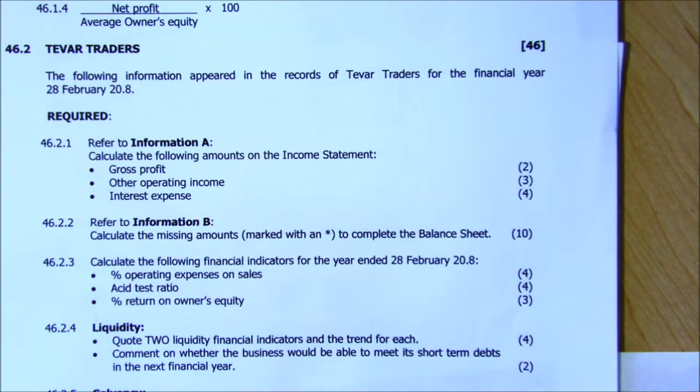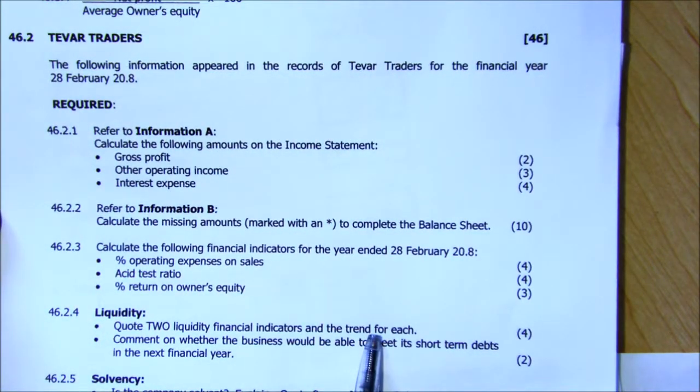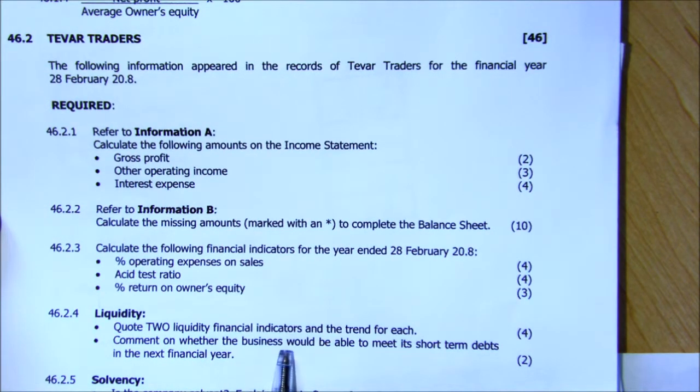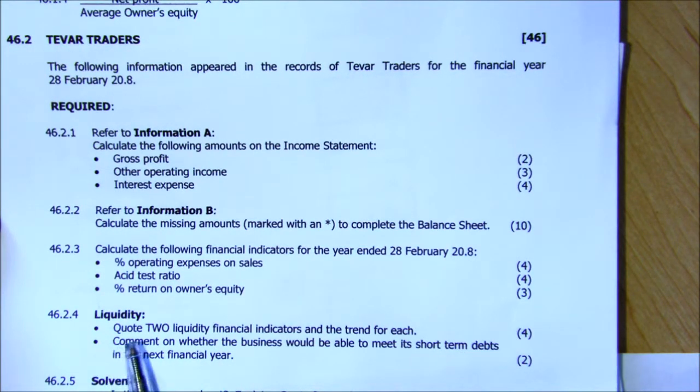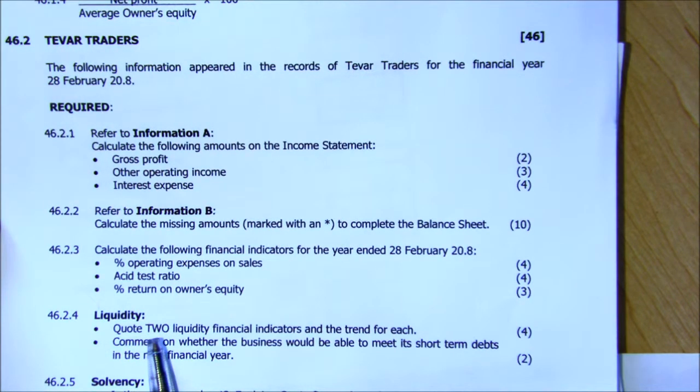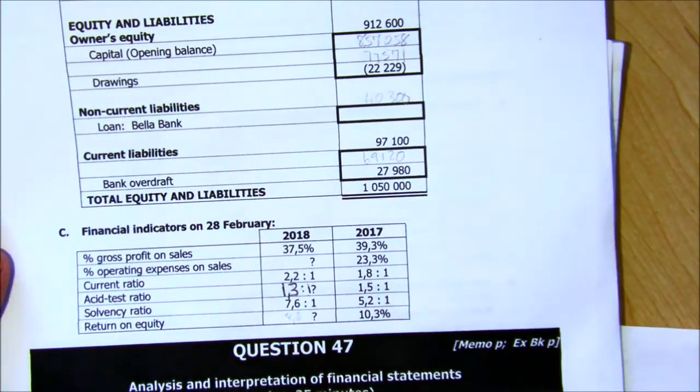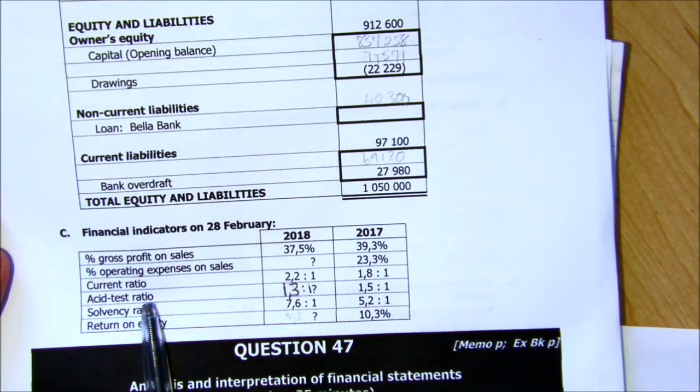The first thing we need to know when we're doing liquidity, in this particular question, it asks you to quote two liquidity financial indicators. So, you need to identify the financial indicators. The financial indicators that we are looking at is around our cash and cash resources. We're looking at our current assets and our current liabilities. If you look in the question paper, we were given some indicators. It's the current ratio and the acid test ratio.